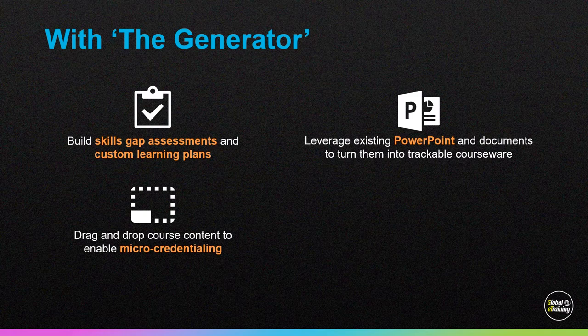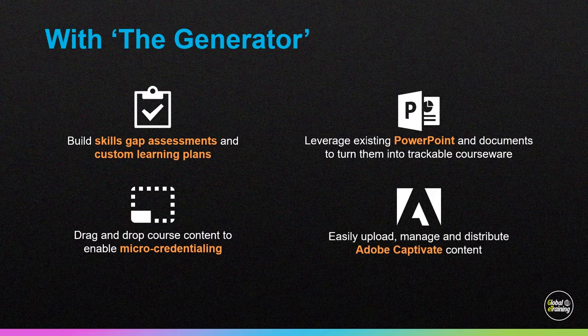Lots of companies have already created PowerPoints or PDFs that they use in classroom or virtual classrooms. With The Generator, you can upload those PowerPoints and turn them into actual trackable online content where you can track engagement. You can do the same with previously created content from popular tools like Adobe Captivate — upload that content to The Generator and take advantage of its great features that aren't available inside Adobe Captivate. We're not asking you to recreate the wheel every time.